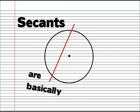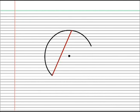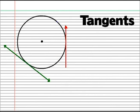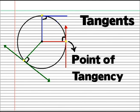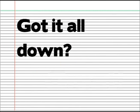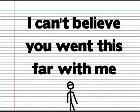Secants are basically chords and have little importance. Secants are lines, rays, or line segments that are perpendicular to the radius drawn towards the point of intersection, called the point of tangency. Got it all down? Great. I can't believe you went this far with me.